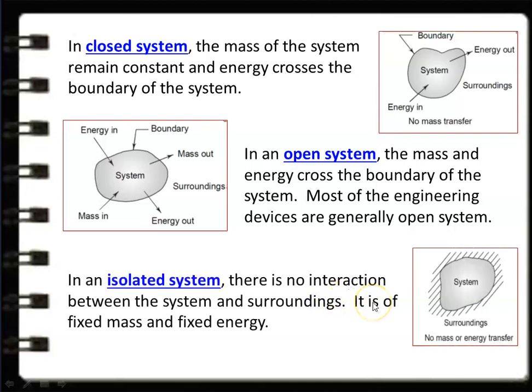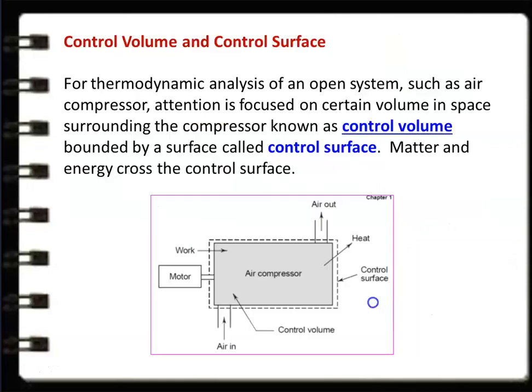In an isolated system, it is completely isolated — it is not interacting with the surrounding. There is no interaction between the system and the surrounding. It has fixed mass and fixed energy. Neither energy nor mass crosses the boundary of the isolated system.